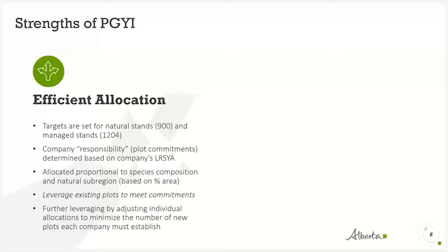There was additional leveraging by adjusting those allocations across companies to minimize the number of new plots needed — a bit of horse trading. If a company is short a few central mixedwood hardwood plots and another has additional ones, they would swap, and the other company might then assume responsibility for some white spruce plots.